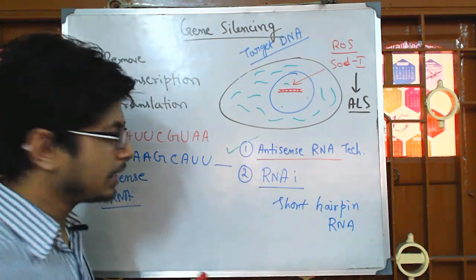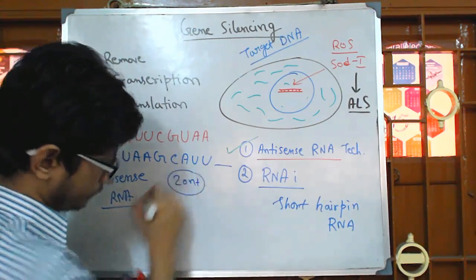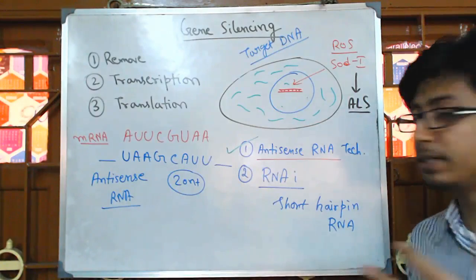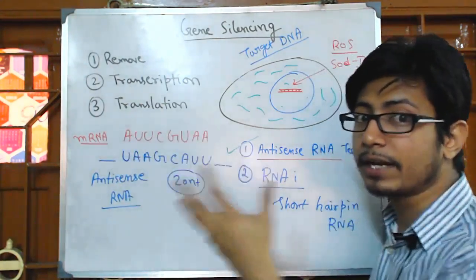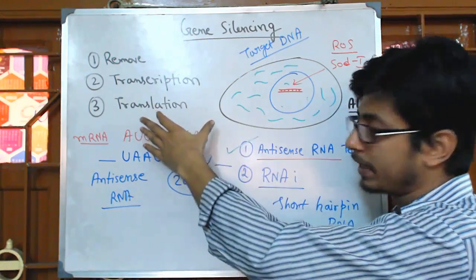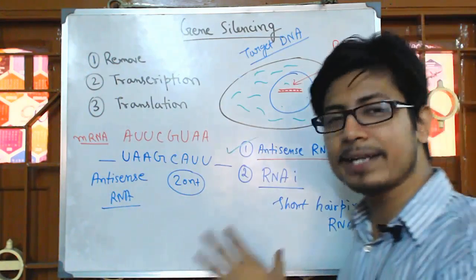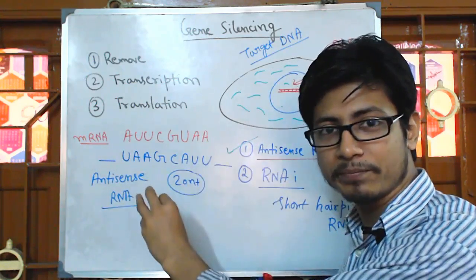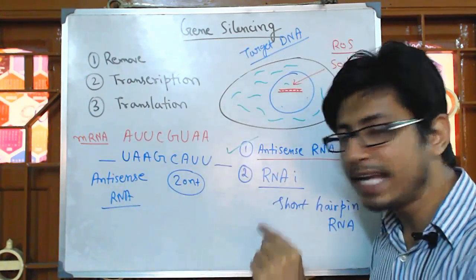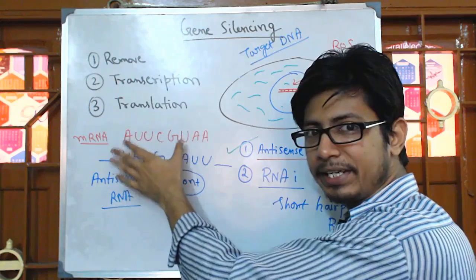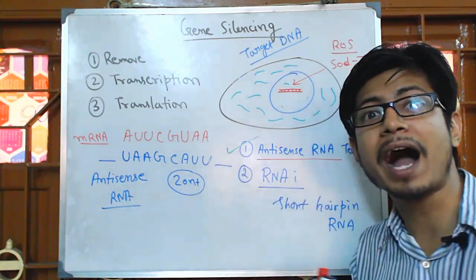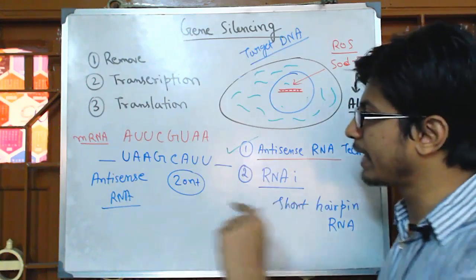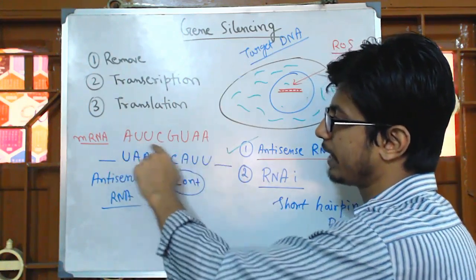Antisense RNA is not very long — it is maximum 20 nucleotides long. There are 15 to 20 nucleotide long sequences of RNA having complementarity against the mRNA of our target. The important thing about antisense RNA technology is that we can inject this antisense RNA from outside into the individual's body, and it can bind with the mRNA sequences because they have complementarity.